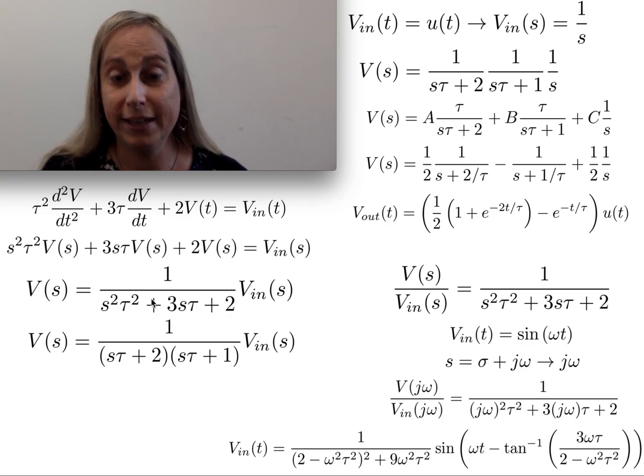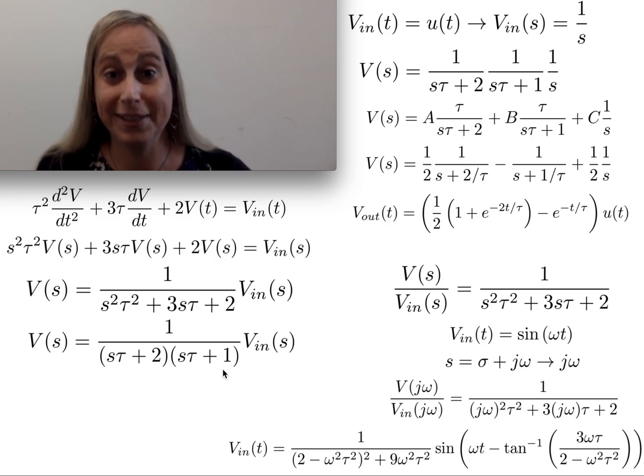And then I'm going to find out this gives me a ratio or basically a polynomial that is a factor of two things, s tau plus 2 and s tau plus 1. So now we have a pretty straightforward structure to work from, and it's in a form that we can start to do different things in terms of various inputs.